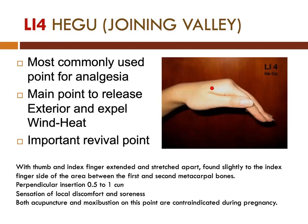The next point is LI4, the Adjoining Valley acupuncture point. LI4 is a very popular acupuncture point. It is the most commonly used point for analgesia. It's the main point to release the exterior and expel wind heat, and it is a very important revival point. LI4 is also the Yuan source point of the large intestine channel, and the command point of the face, nose, mouth, and jaw.